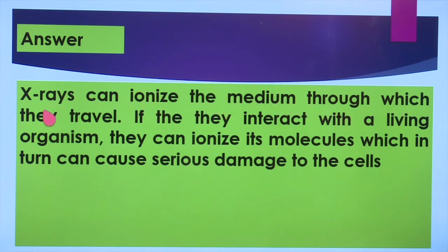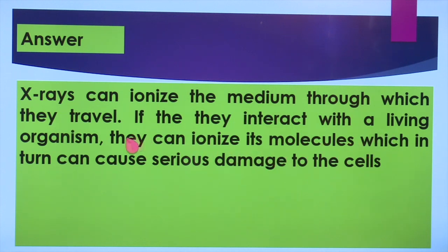X-rays ionize the medium through which they travel. If these X-rays interact with a living organism, they can ionize its molecules, which can in turn cause serious damage to the cells. Because of that, X-rays are very dangerous. If they pass through living cells of a human body or any other living organism, they are likely to ionize its molecules, which damages the cells and can kill them. A cell is the basic unit of life — if a cell is destroyed, life will be destroyed.